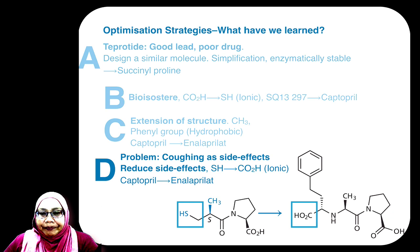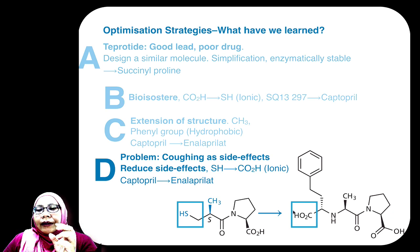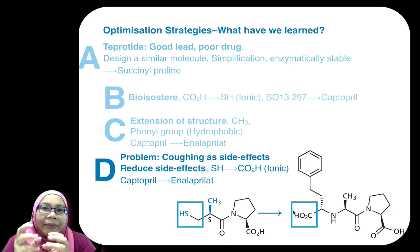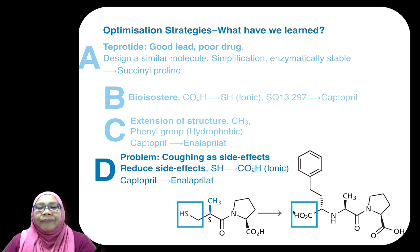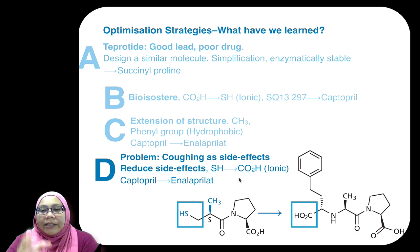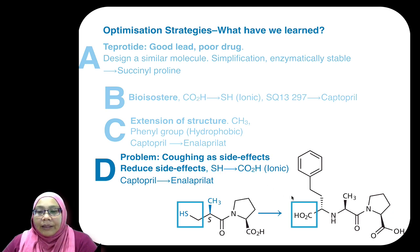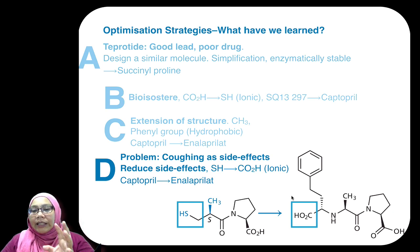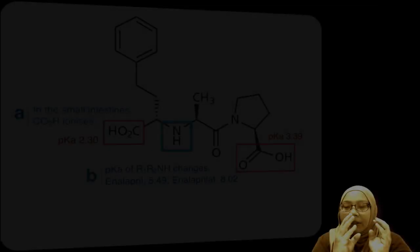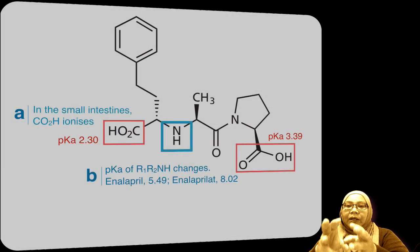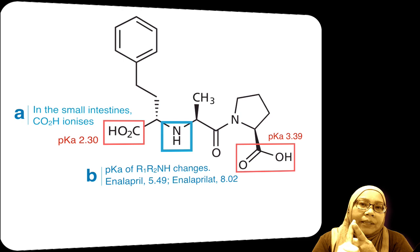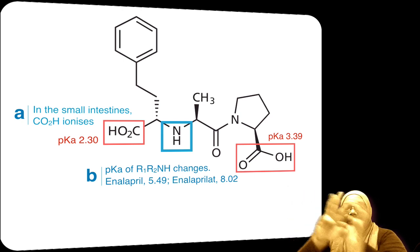Why change from a thio group back to a carboxylic acid group? In captopril, even though it's a good drug, it has side effects in some patients — it gives persistent coughing. They figured out that the side effect is due to the thio group. So once they changed the thio group back to carboxylic acid, that side effect goes away. There is much less coughing in enalaprilat. The original change from carboxylic acid to a thio group was to solve the bioavailability problem. Now in enalaprilat, changing it back to carboxylic acid means they have to find a new way to solve the poor bioavailability.